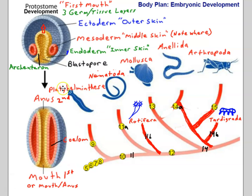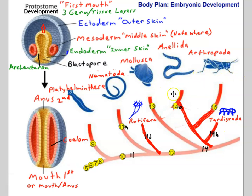The definition of a coelom is a second body cavity, other than the digestive cavity, that is completely within mesoderm. Some animals are coelomates and others are acoelomates — they don't have a coelom. For example, Platyhelminthes is an acoelomate. Nematoda and Rotifera are pseudocoelomates — they have another cavity but it's not completely within mesoderm. Mollusca, Annelida, Arthropoda, and Tardigrada are all true coelomates or eucoelomates, meaning they have that cavity completely within mesoderm.